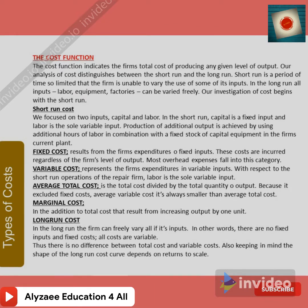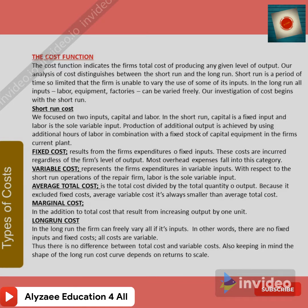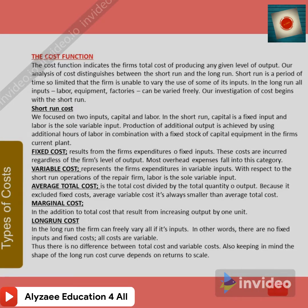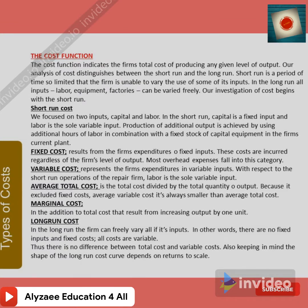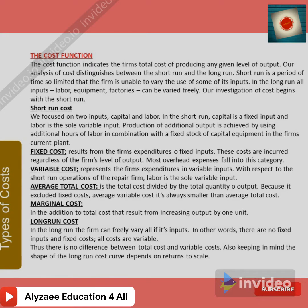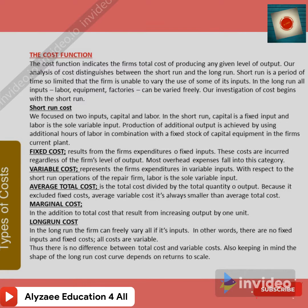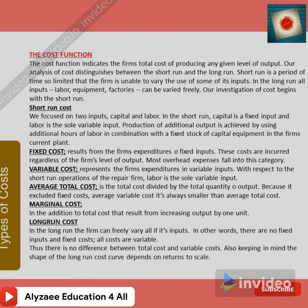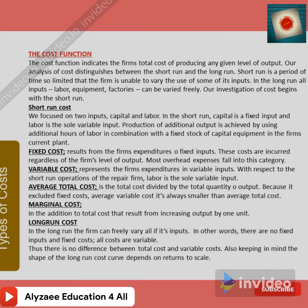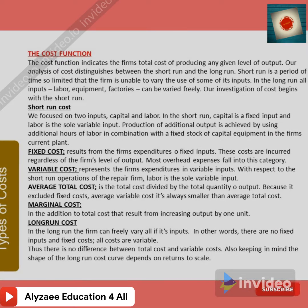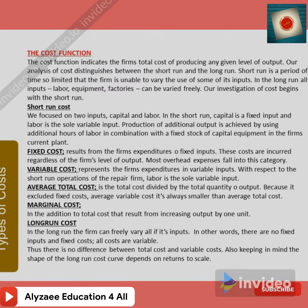In the short run, capital is a fixed input and labour is the sole variable input. Production of additional output is achieved by using additional hours of labour in combination with the fixed stock of capital equipment. Fixed costs result from the firm's expenditure on fixed inputs and are incurred regardless of the firm's level of output — whether they are producing 10,000, 20,000, or 30,000 units. Examples include building tax, security cameras, and trucking fuel and dealer costs.